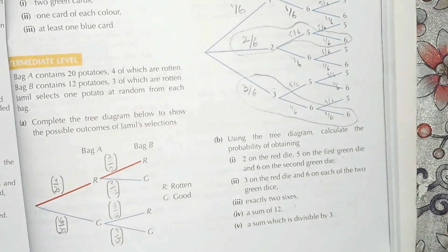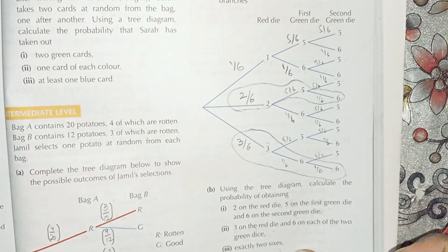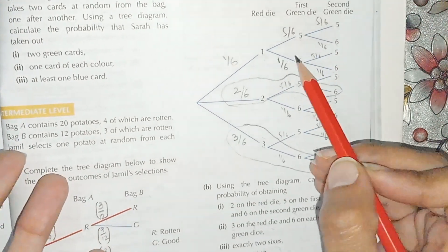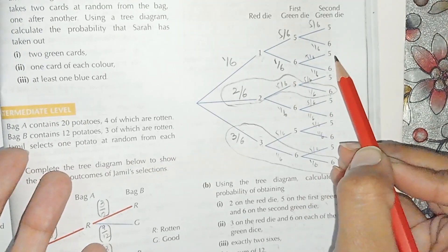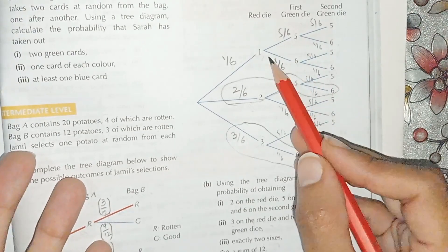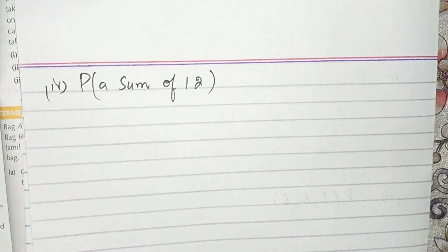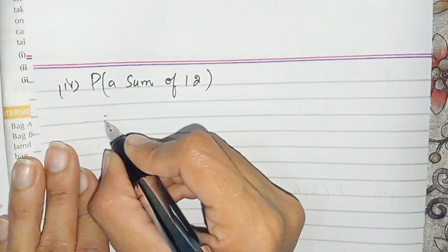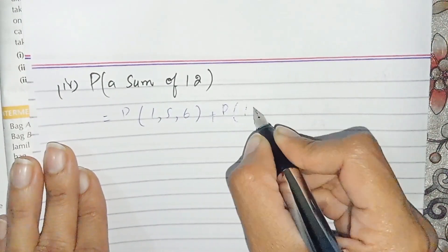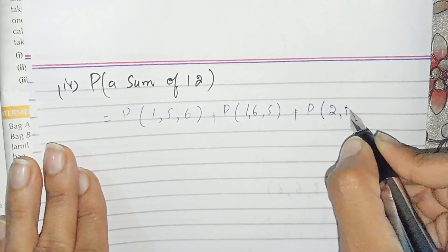For part 4, we find the probability of a sum of 12. From the tree diagram, we can obtain a sum of 12 with outcomes (1,5,6), (1,6,5), and (2,5,5). These are the three ways. We write the probability as P(1,5,6) plus P(1,6,5) plus P(2,5,5).